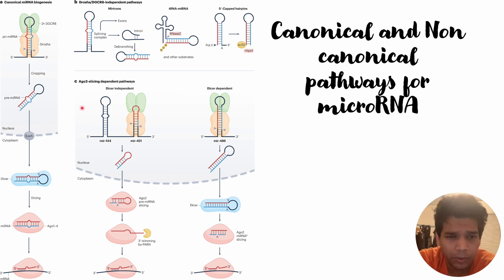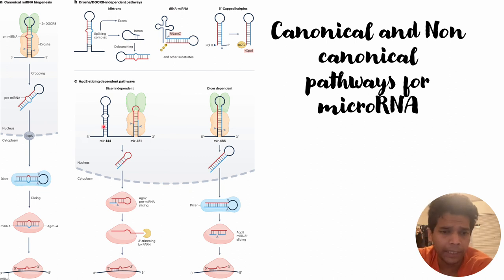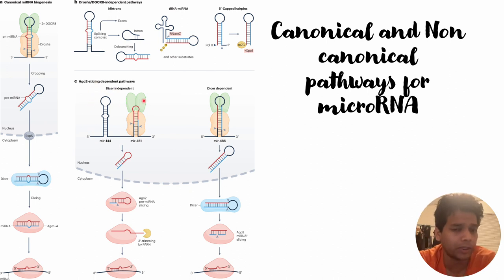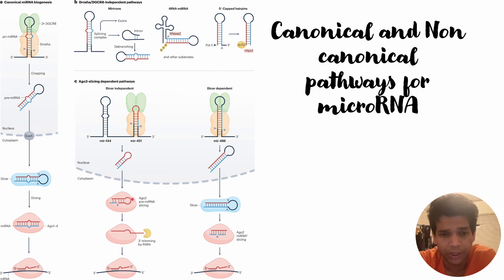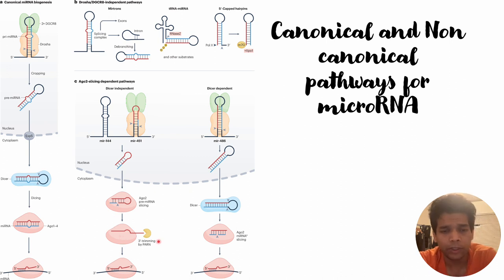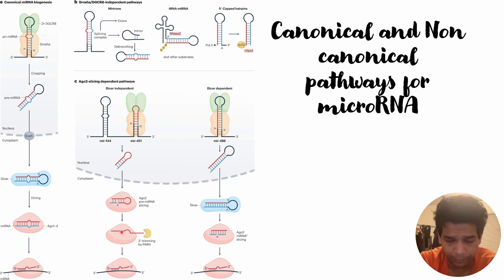Now let us understand how AGO slicing helps in micro RNA processing. There are two different ways: the first does not require micro RNA processing within the nucleus (Dicer-independent), while the canonical pathway requires it. In the Dicer-independent reaction, the hairpins are short enough that they cannot be processed by the microprocessor and can directly go into the cytosol to interact with AGO. AGO then removes the template from its end.